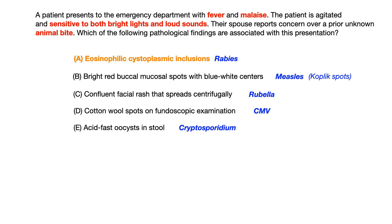Lastly, choice E — acid-fast oocysts in the stool — is associated with cryptosporidium, and the big risk factor for cryptosporidium is HIV, AIDS, and immunosuppression. So if you know what each answer choice is associated with, ask yourself: if the test writer wanted me to pick cryptosporidium, would they have given me an animal bite? Probably not — they would have given you immunosuppression or HIV/AIDS. That's how you want to train your brain to think.